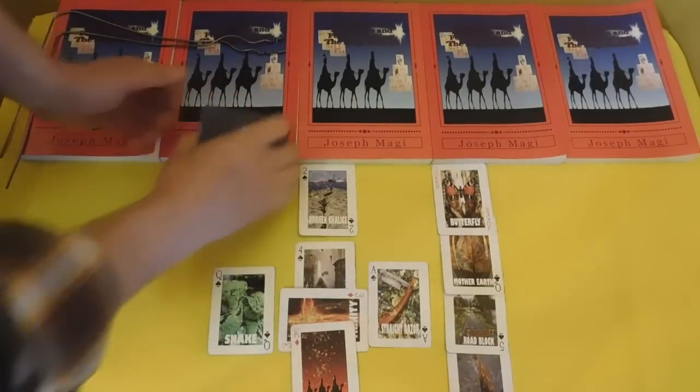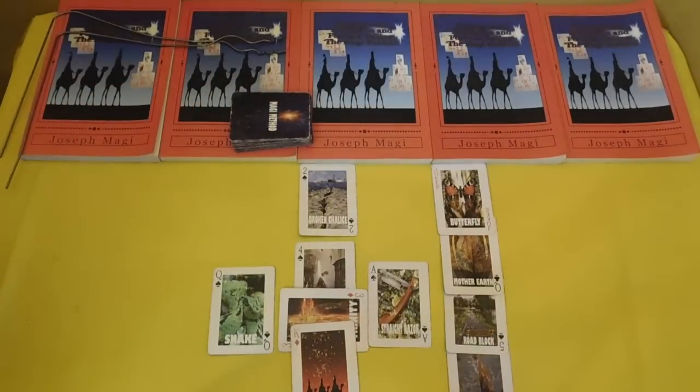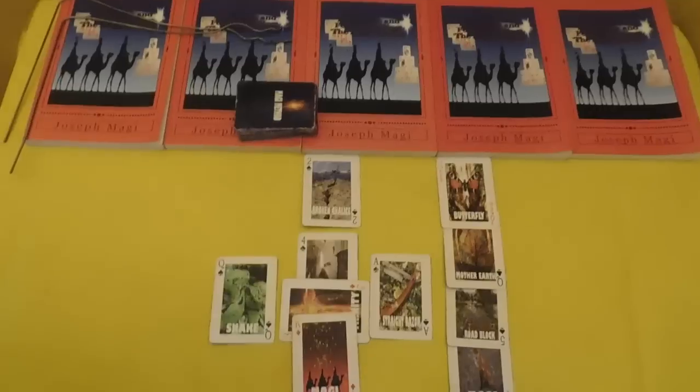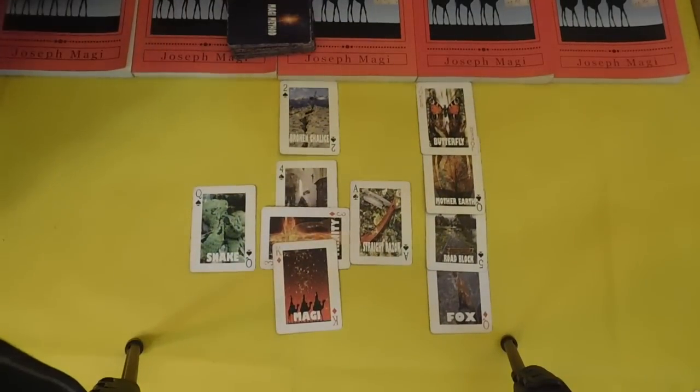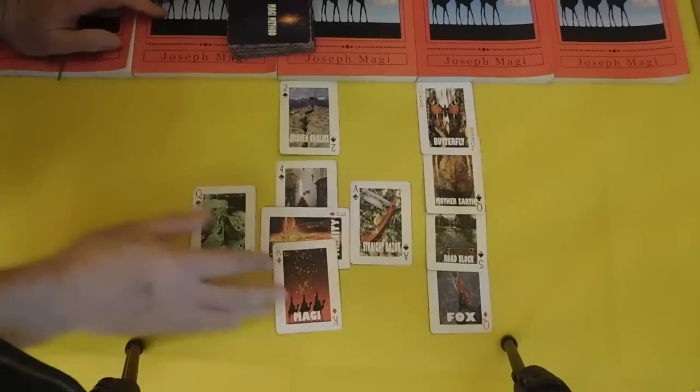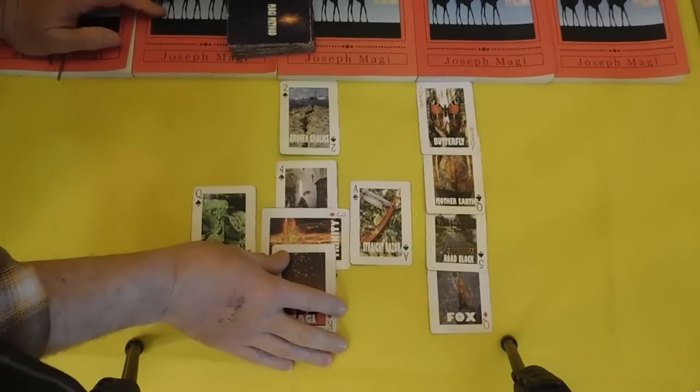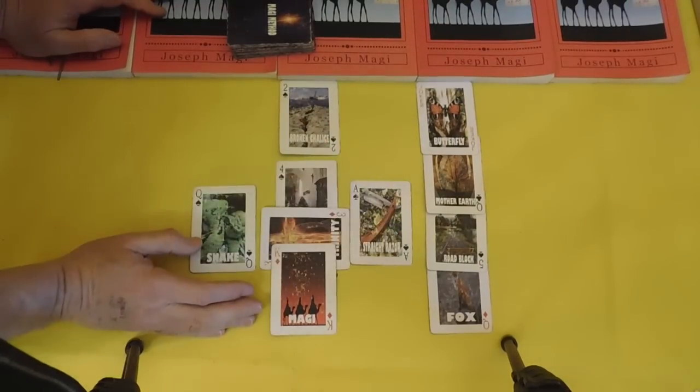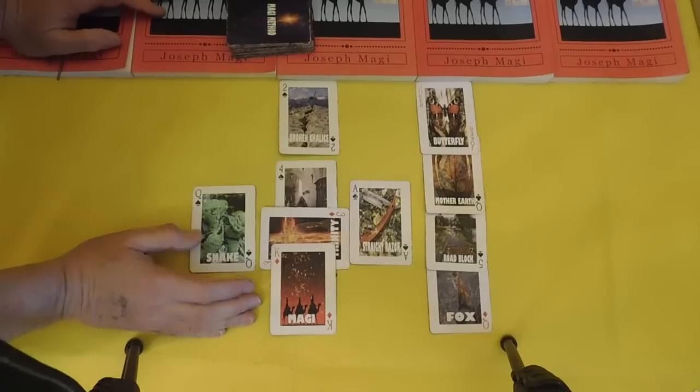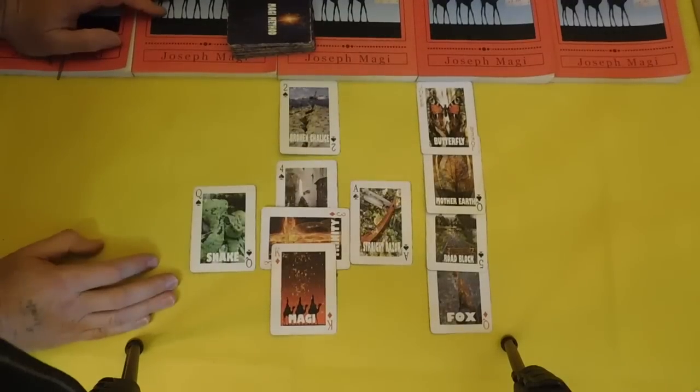And then she got her husband to eat the fruit. So, Adam was not there when Eve was being deceived by the serpent. Because Adam, he actually got the commandment directly from God. And Eve did not. But she got it secondhand from Adam. So, she was the softer target, as they say.